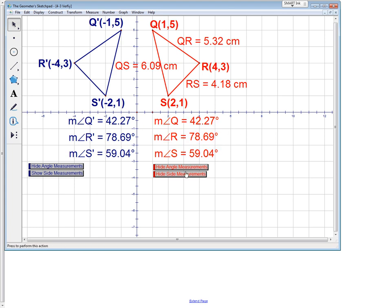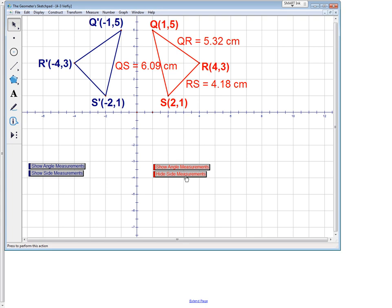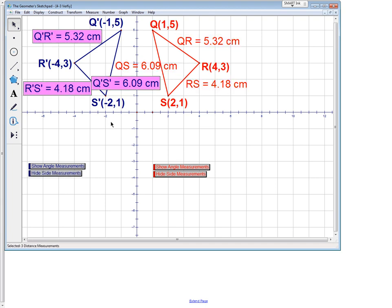Nothing has changed. So our flip has preserved angle congruence. We also need to preserve the lengths of the sides. Our original triangles had the measurements of 4.18, 5.32 and 6.09 and our new triangle is at 4.18, 6.09 and 5.32. So it is also preserved congruency.